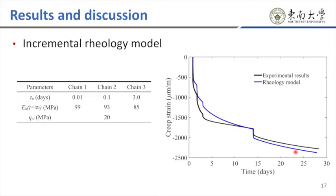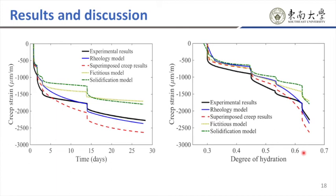Let's plot all the predicted results together, including the superimposed creep result as a function of time and as a function of degree of hydration. The superimposed creep results of materials under constant load overestimate the creep strain by about 450 micrometers per meter. This overestimation is to be expected, since this approach does not really take into account the loading history.